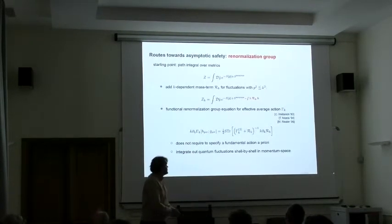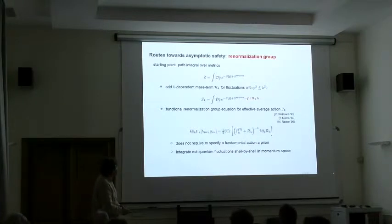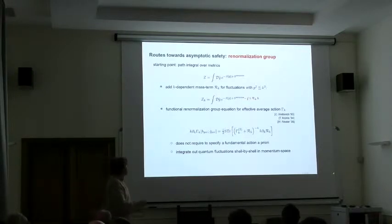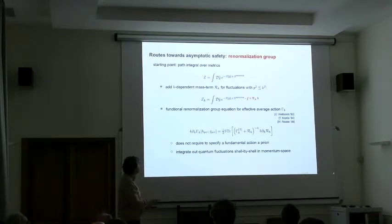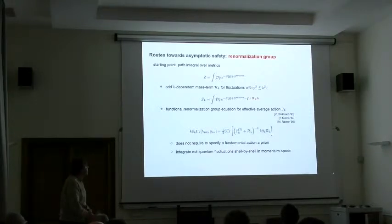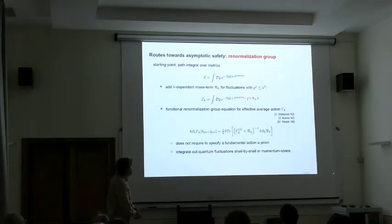Having the wish list, we need to have a tool to actually do computations. The starting point is path integral over metrics. This is a highly intractable thing. What the renormalization group does, it starts from this path integral. It adds a regulating term to it. This guy here adds a mass term to fluctuation modes with momentum p squared smaller than k squared. Then we can massage this expression from a path integral to a functional differential equation. Essentially what we have here on the left hand side, this is called effective average action. This equation tells us how the corresponding expression changes if we integrate out quantum fluctuations.